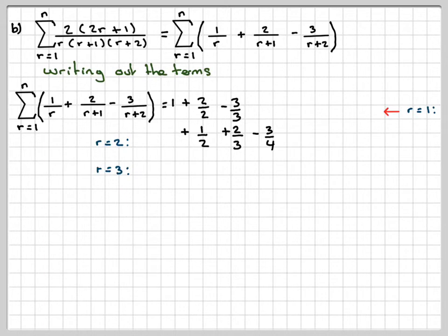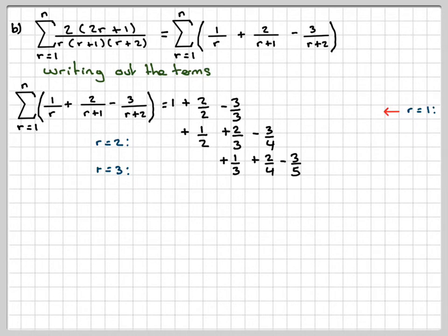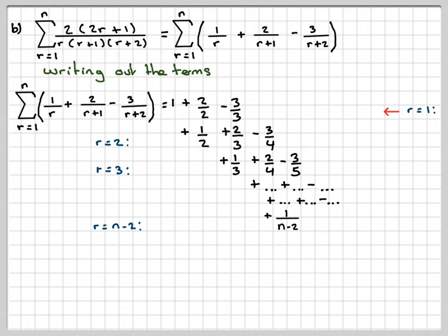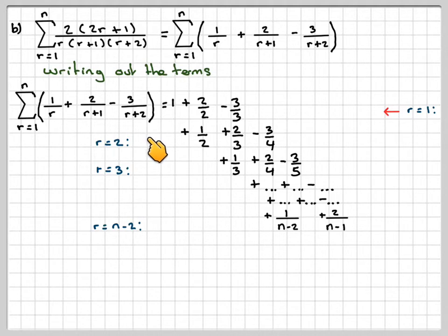We do one more: when r=3, we get 1/3. Notice how I'm setting this out — I'm lining up all the terms with denominator 2, all with denominator 3, and so on. Then 2/4, not cancelling fractions, minus 3/5. Carrying on, when r=n-2, we get 1/(n-2) + 2/(n-1) - 3/n.